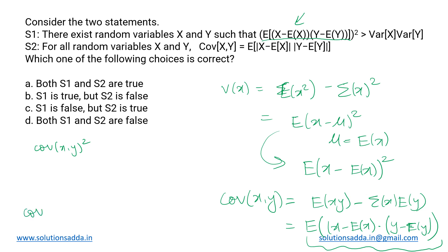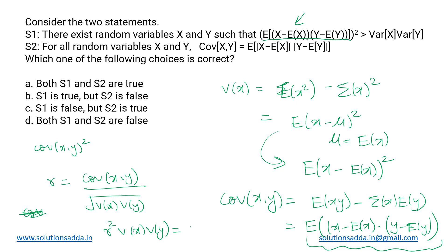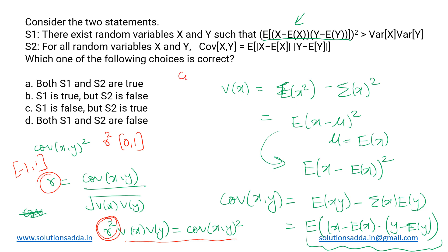We know the formula for the correlation coefficient: r equals covariance of (X, Y) divided by the square root of variance of X times variance of Y. Squaring the whole equation gives: r squared times variance of X times variance of Y equals covariance of (X, Y) the whole square. Since r lies between minus 1 and 1, r squared lies between 0 and 1, so the inequality becomes: covariance of (X, Y) squared is less than or equal to variance of X times variance of Y.